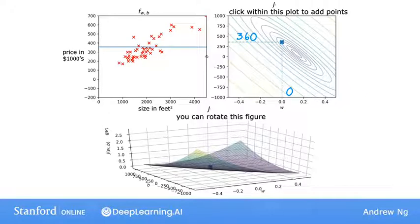This pair of parameters corresponds to this function, which is a flat line, because f of x equals 0 times x plus 360. I hope that makes sense.